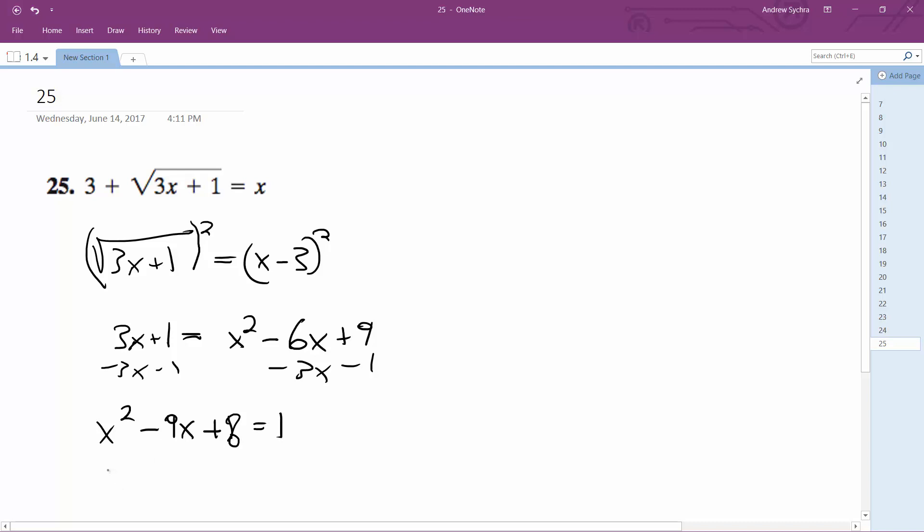So that gives me x minus 8 and then x minus 1 equals 0, which means x can be equal to 1 or 8. But we need to check real quick.